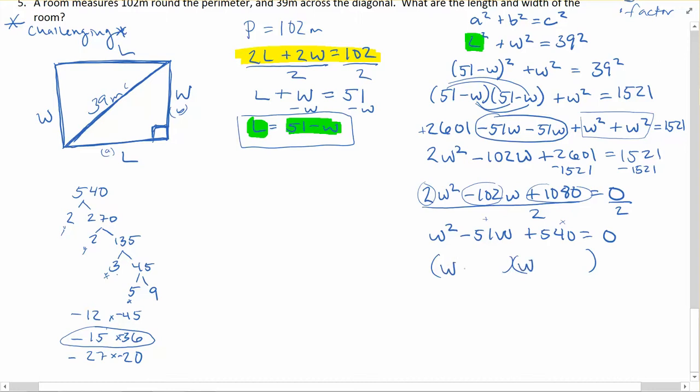So (W - 15) and (W - 36) is going to be equal to 0. In this case, W - 15 = 0, W - 36 = 0. Our two solutions: W is going to be equal to 15 or 36, and this should be in meters because that is what we've been measured in to begin with.